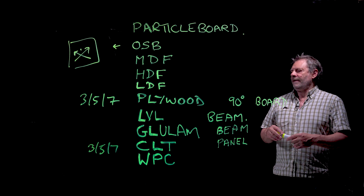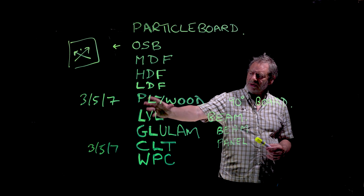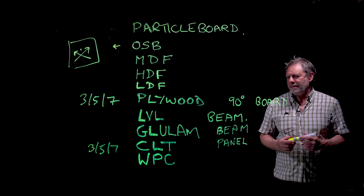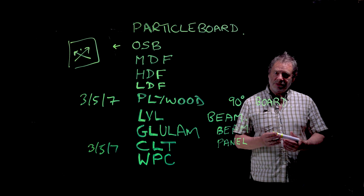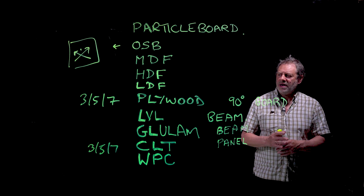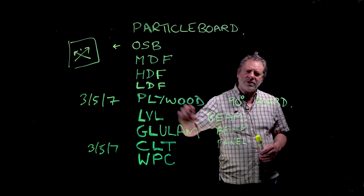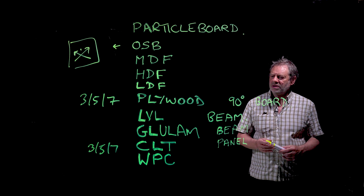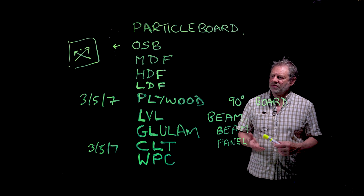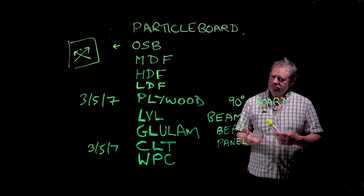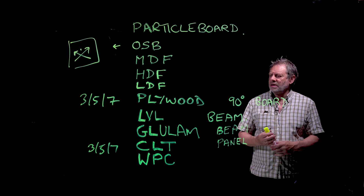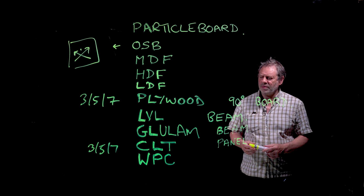Somewhere between plywood and LVL, there are various laminated wood products used for flooring, ceilings, and shaped architectural panels. You might have a decorative ply on the top surface. There's a whole bunch of products in that plywood-LVL region where you might have 90-degree orientations, same-direction orientations, or a mixture. Flooring, ceilings, walls, doors, furniture - all these sorts of things - very commonly use these laminated structures, which are very popular for interesting shapes and were widely used in the past.